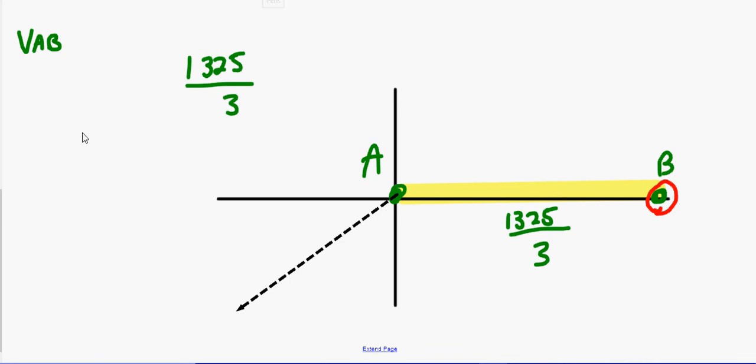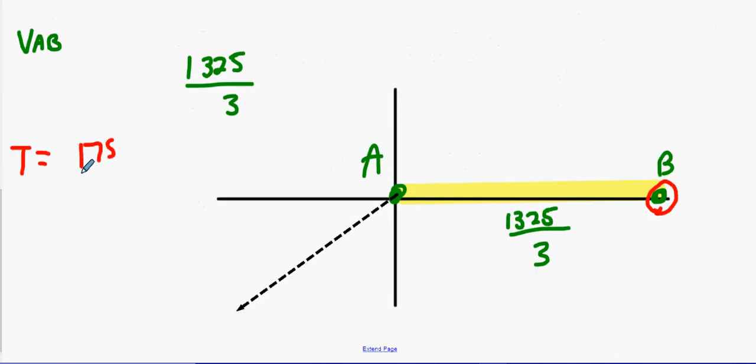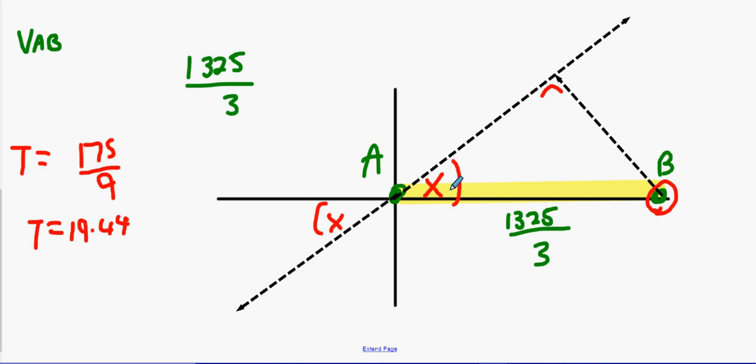Because we're currently at a time frame of what is it, 175 over 9, and 175 over 9 is roughly a good 19.44 seconds in the future. This means that your closest approach has already happened. So what do we do? What's our little trick again? Extend it backwards and draw your perpendicular. If this is angle X, what's this one? Because they're vertically opposite angles.